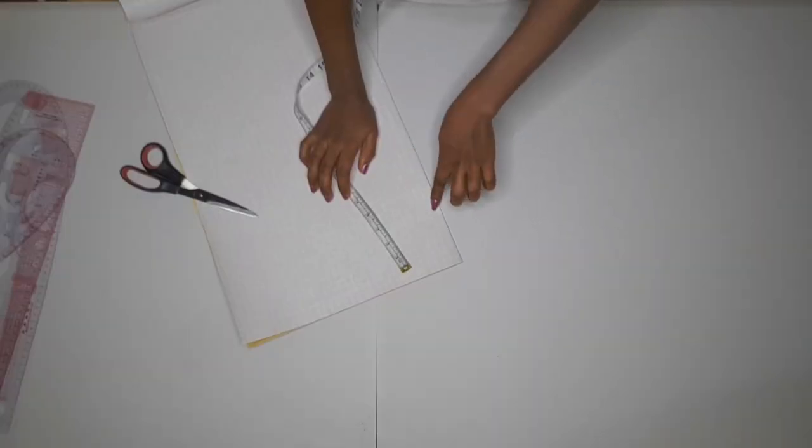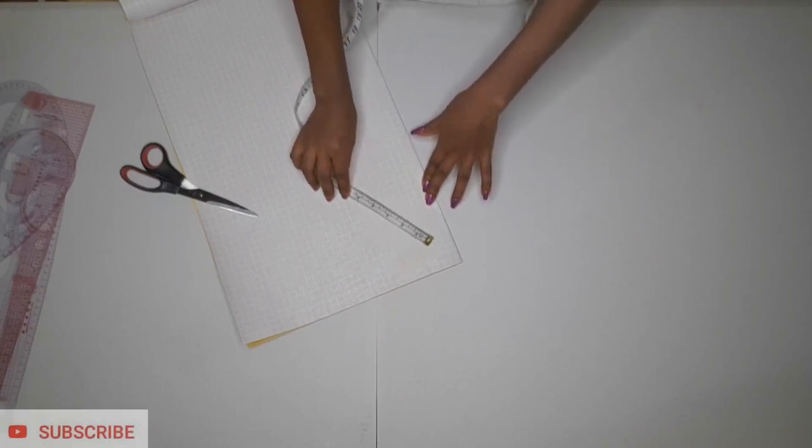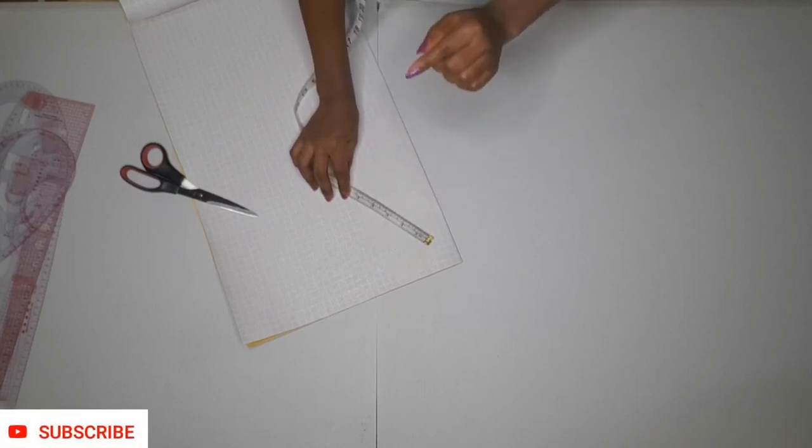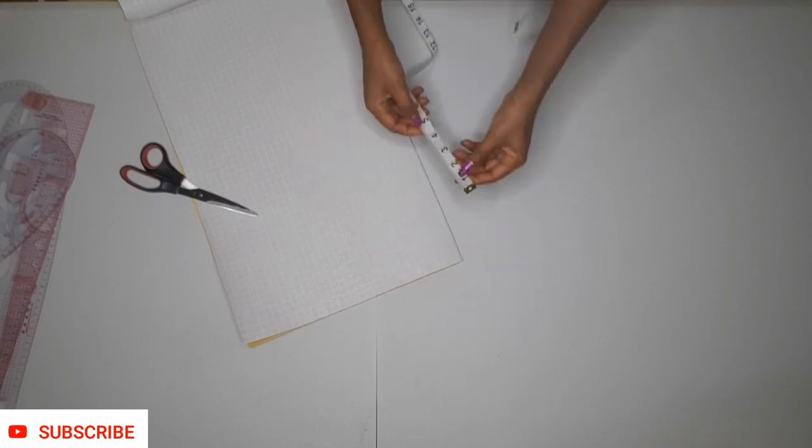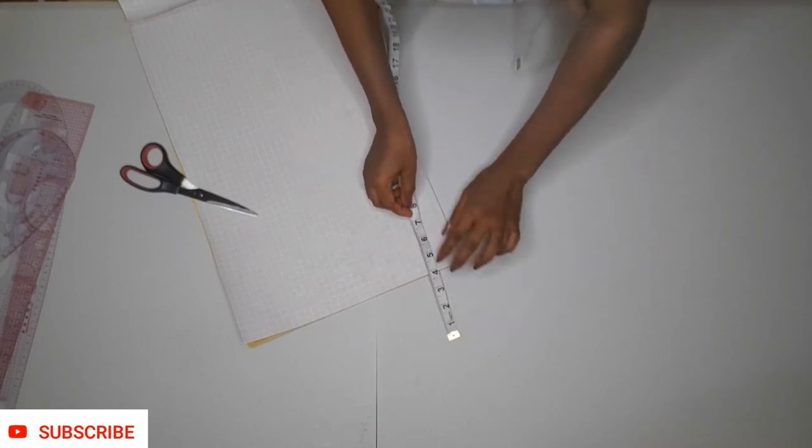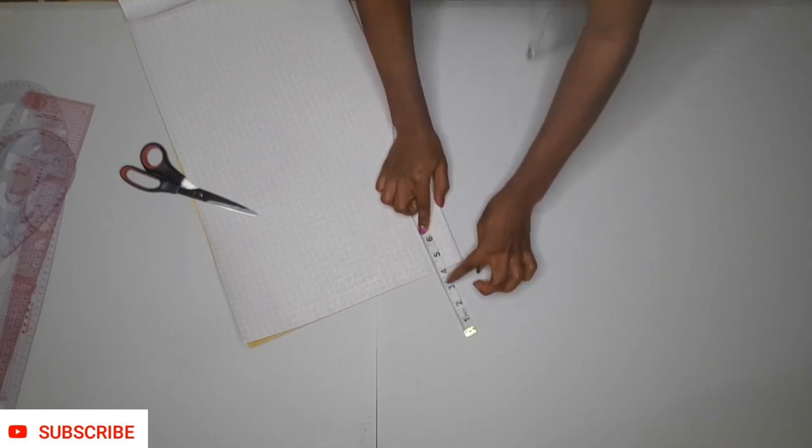In order to get started, we need to draw out our chest line. To do that, we are going to determine how deep we want our neckline to be. For me, I want my neckline to be 4 inches deep, so I'm going to be placing my ruler 4 inches away from the edge of my paper.